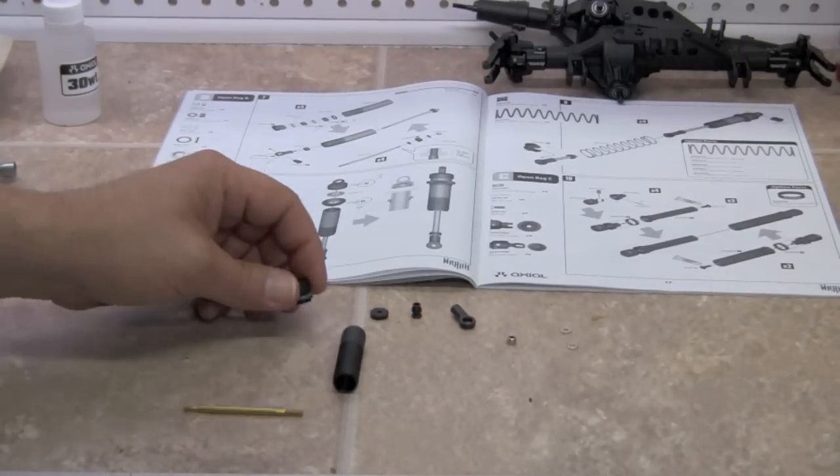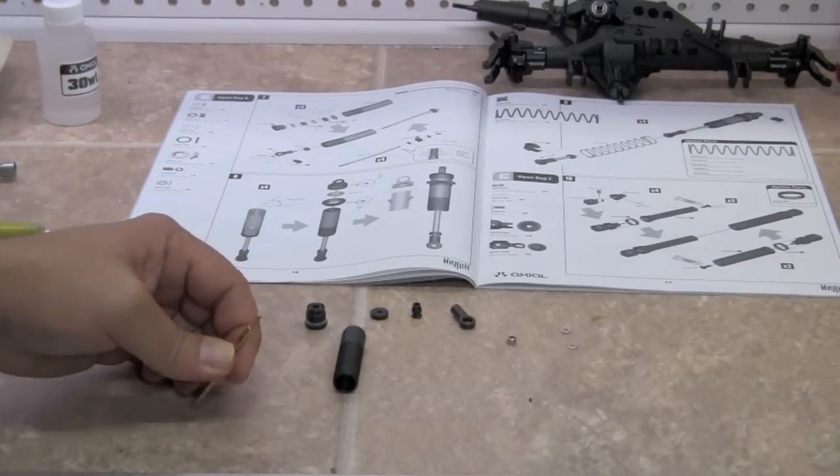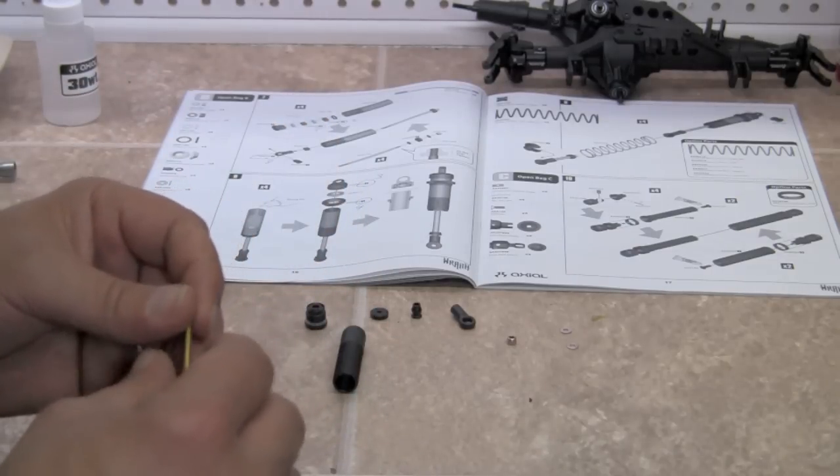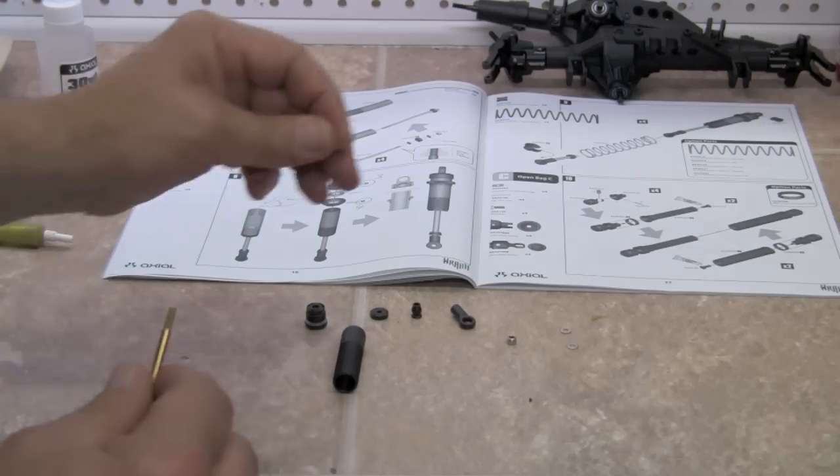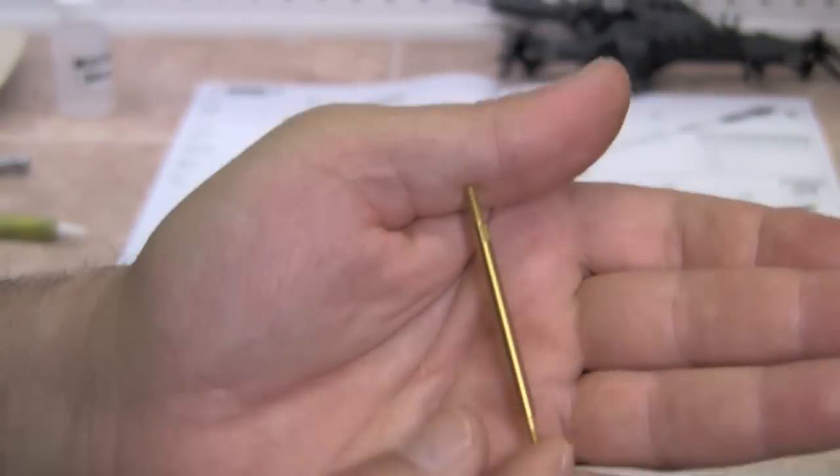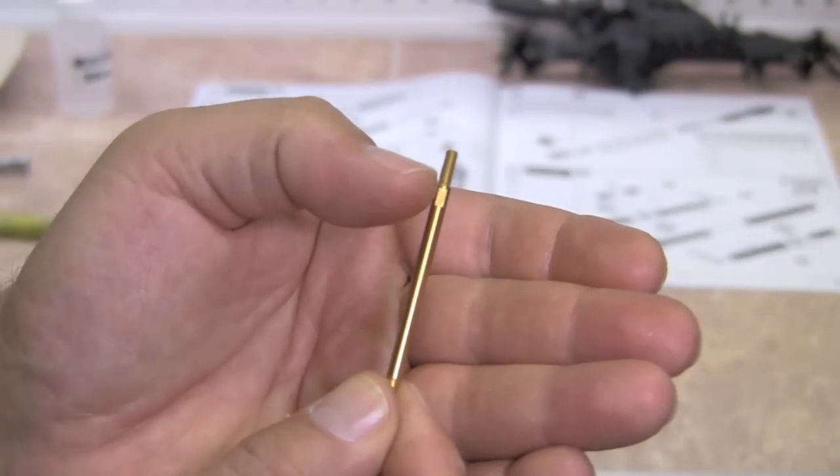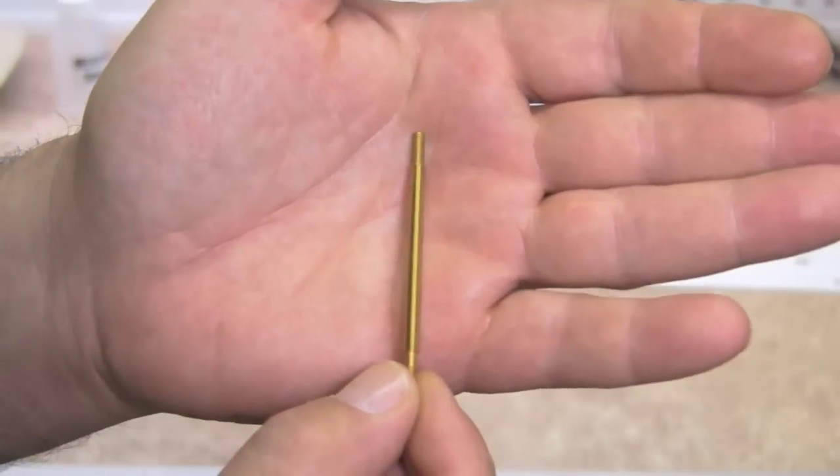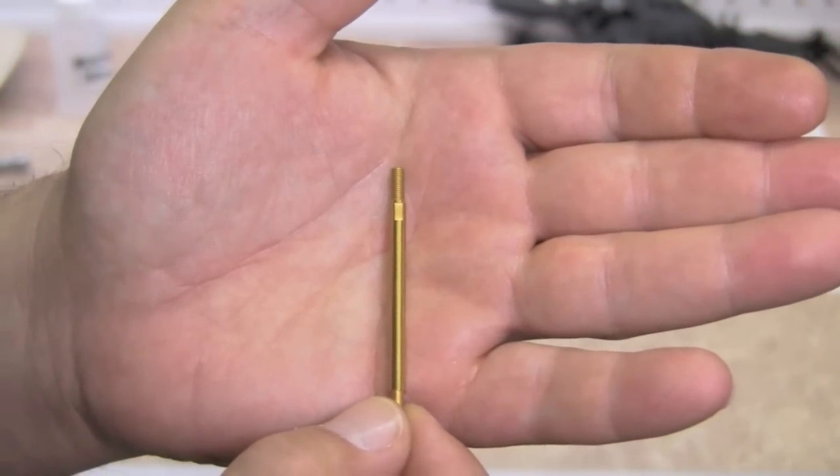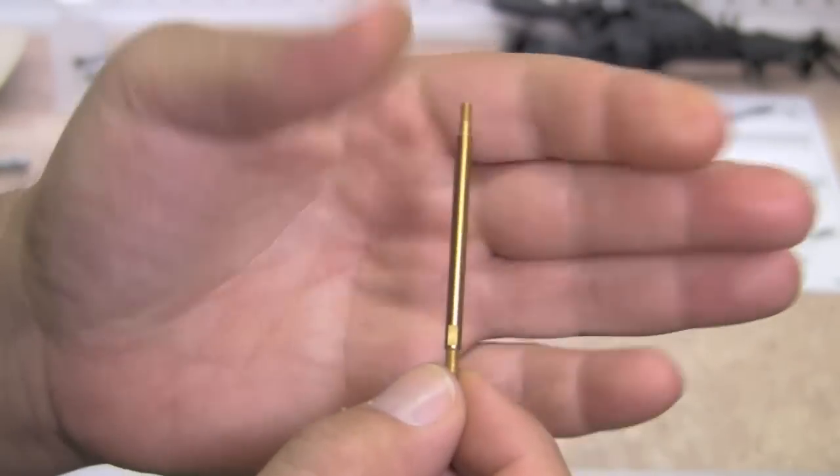From here, we are going to take our shock shaft, and we're going to put our piston on there. First thing we're going to do is, as we look at the shaft, you're going to see that one end of the shaft has flat spots on it, which is right here, and the other end does not. The end that has the flat spot is the end that goes down to the bottom of the shock, so it sits like this.